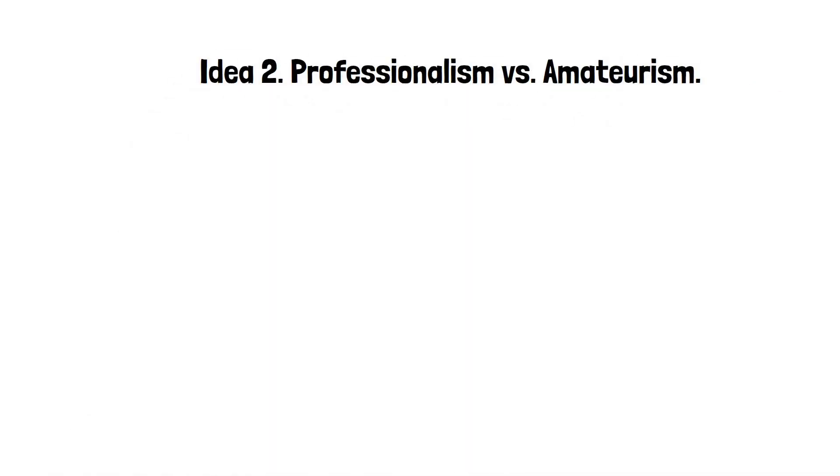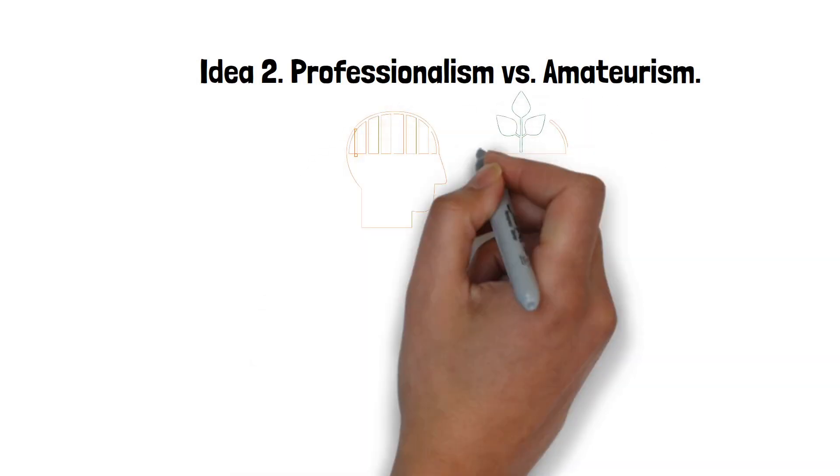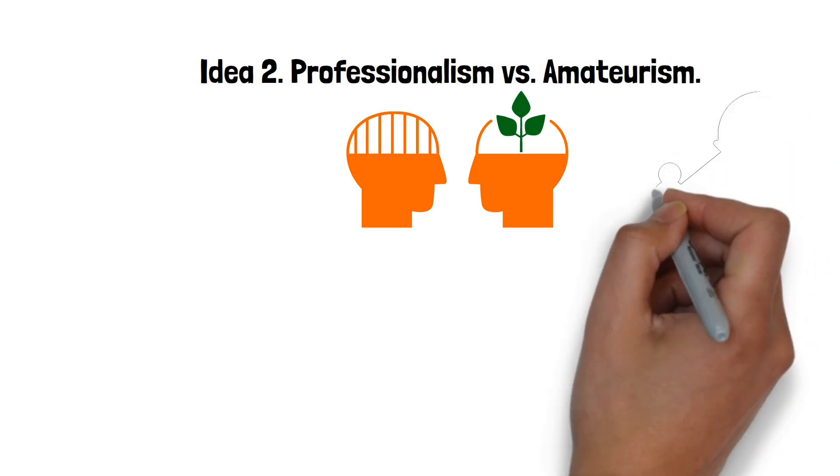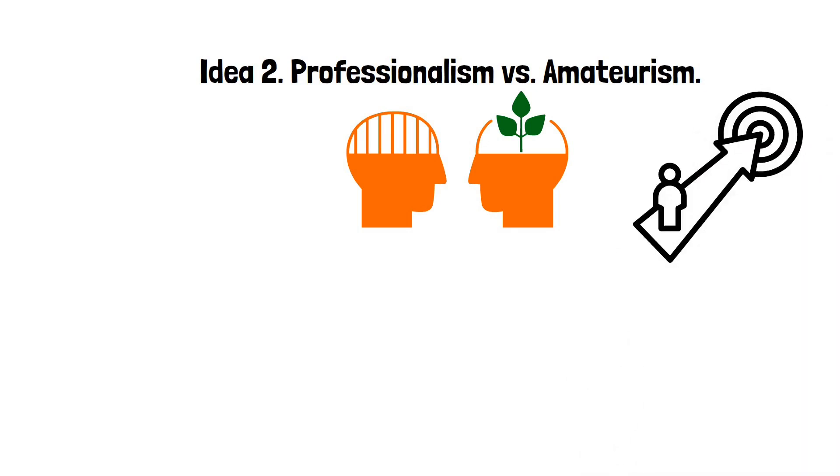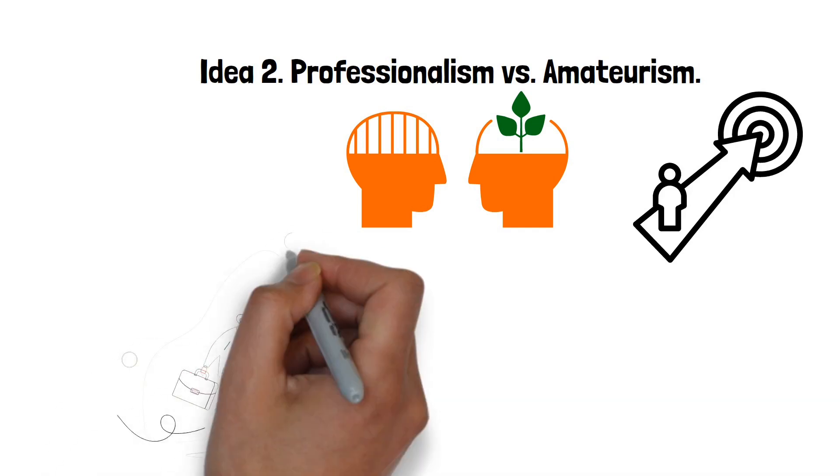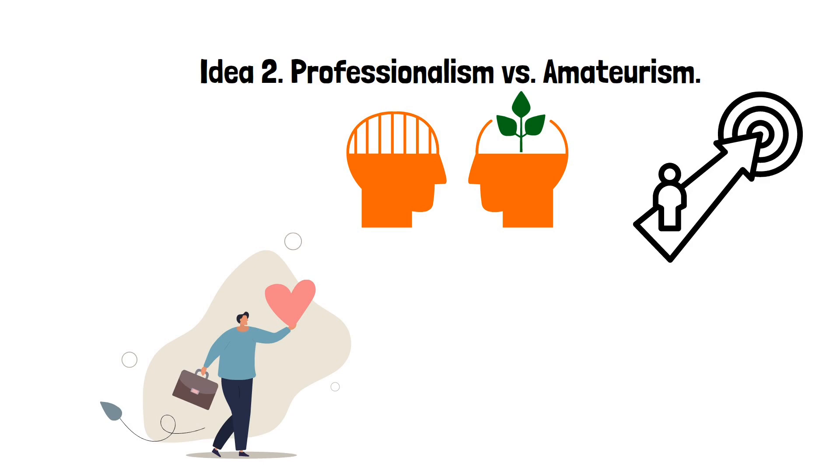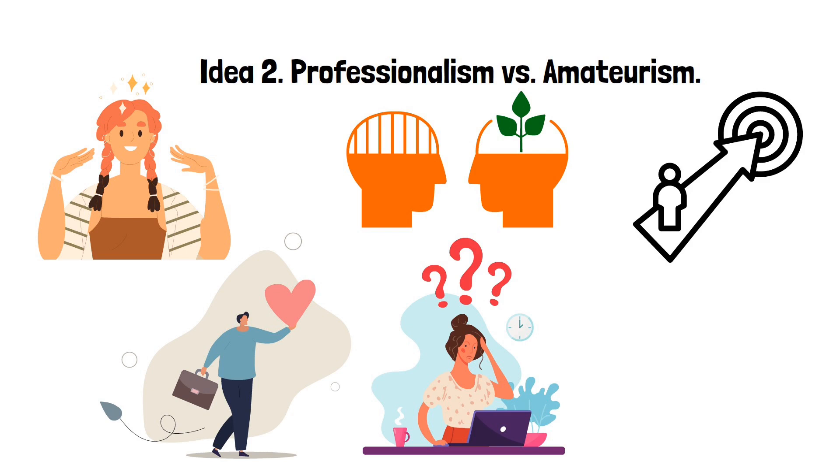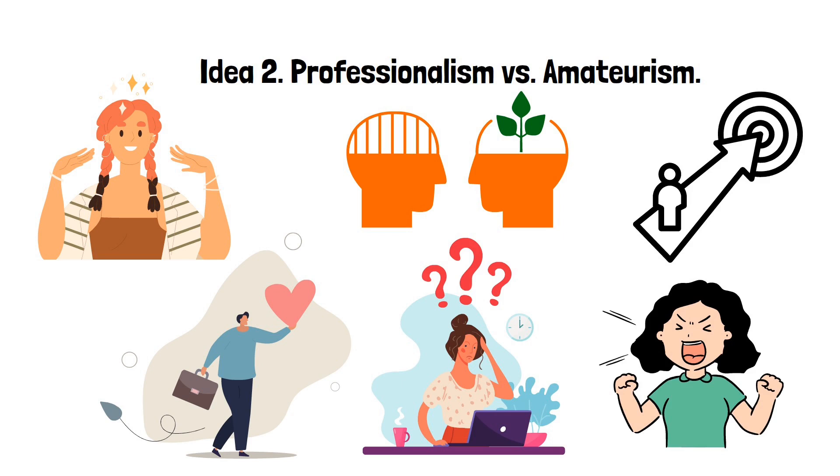Idea 2: Professionalism vs. Amateurism. In the world of creativity and work, there are two types of mindsets: that of a professional and that of an amateur. Understanding the difference between these two can be a game-changer in how we approach our goals and passions. An amateur loves what they do, but their approach can be casual or inconsistent. They might work on their craft only when they feel inspired or when it's convenient. This approach often means they struggle to finish projects or make significant progress. They might blame outside factors for their lack of progress and might not push through the tough times.